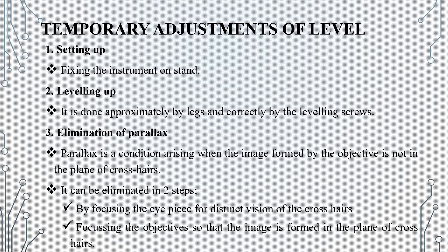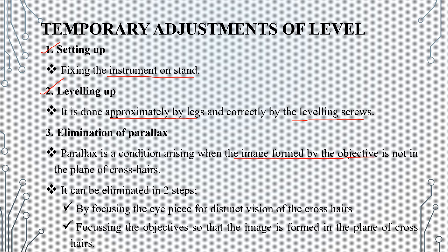The next step is the temporary adjustments of the level. The first step is setting up the instrument. The second step is leveling. The third step is elimination of parallax — we focus on the eyepiece and then on the objective, and make the necessary correction to eliminate parallax.